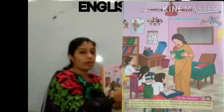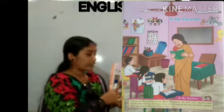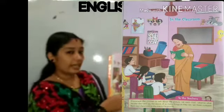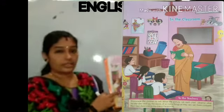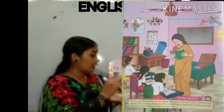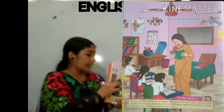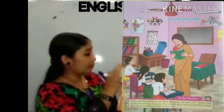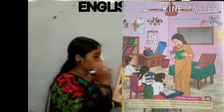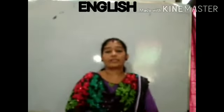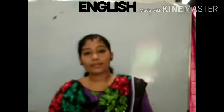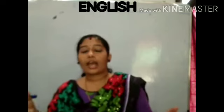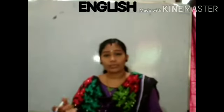Then we have a blackboard. Then here is a bookshelf. Here is a bookshelf. Students like you — children, kids, small kids — and here is a chair. Then table, book, pen. Then picture chart, map. So many things in the classroom, isn't it? We can see a teacher and some children and blackboard, bench, desk, and our classroom is very beautiful.